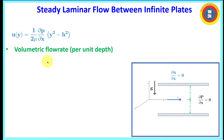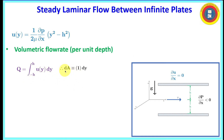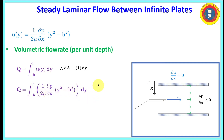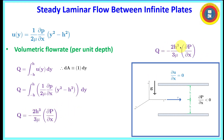Now let's find the volumetric flow rate per unit depth. Because the distance in the z direction is infinite, total flow rate would be infinite, so we work per unit depth. The differential area is just 1 times dy. Integrating the x-velocity from minus h to plus h and simplifying gives our answer for volume flow per unit depth. We'll set this aside and use it again shortly.